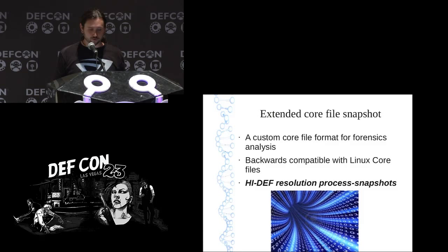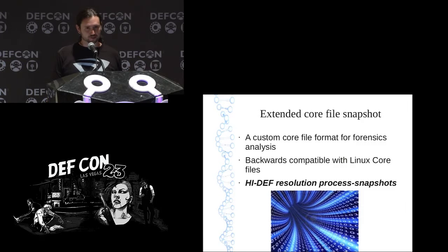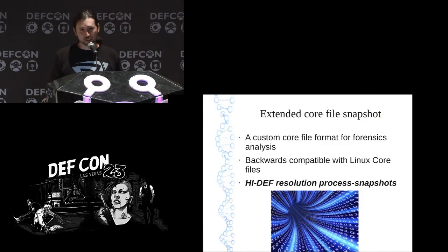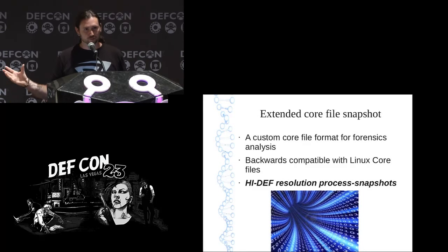Extended Core File Snapshot technology is a custom core file format. It's an ELF format based on original core files and is backwards compatible with original core files, so you can still use them for debugging. You can also use them for detection and malware analysis. As we'll see later, you can even relaunch these snapshots back into memory — in other words, you can pause a process and restart it where it left off two weeks later.